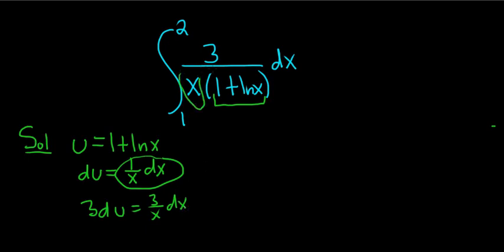And so now you see here we have 3 over x dx. This is equal to the circle piece is 3 du, and the bottom piece is u.